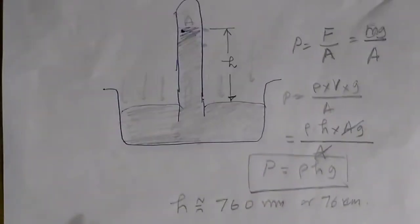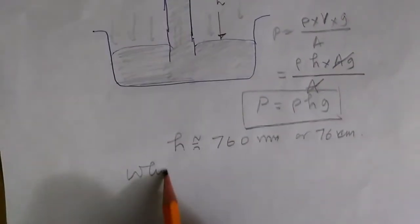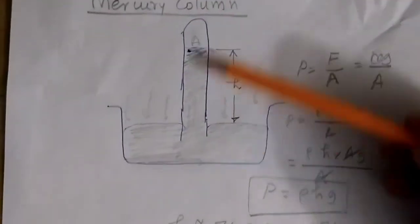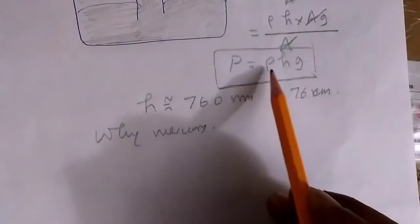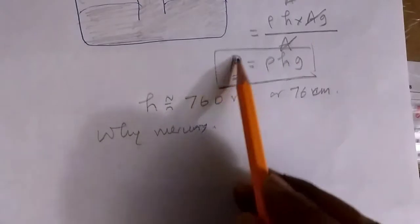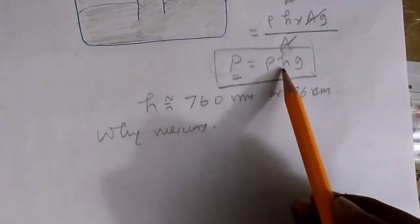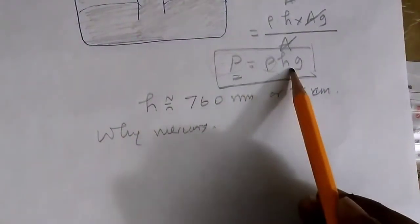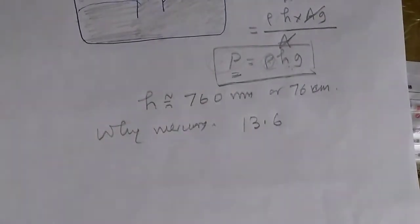There are a few things you need to understand. Why only mercury? Why not choose something like just simple water? Well, you can use water, but the problem with water is that for the same given pressure, pressure is constant. You have to choose two different materials. To keep the height low, you need to keep rho very high. Mercury has a relative density of 13.6.